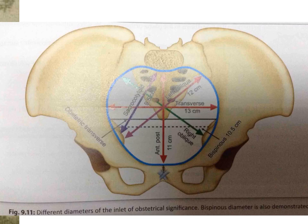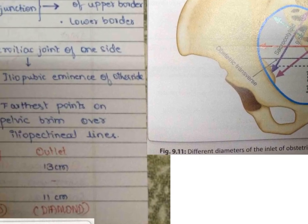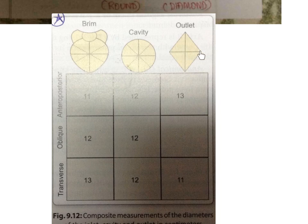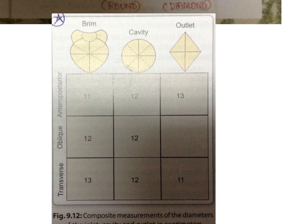In the cavity, since it is round in shape, all diameters are 12 cm (12-12-12). At the outlet, which is diamond-shaped and also called the plane of least pelvic dimension, there is no oblique diameter. The AP diameter, which is the shortest at the inlet, becomes the largest at the outlet; the transverse, which was largest at the inlet, becomes the shortest — measuring 11 cm.